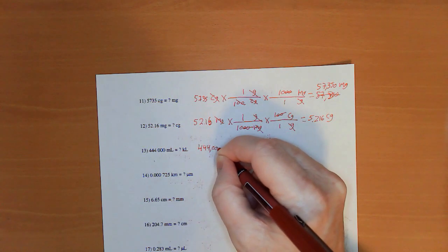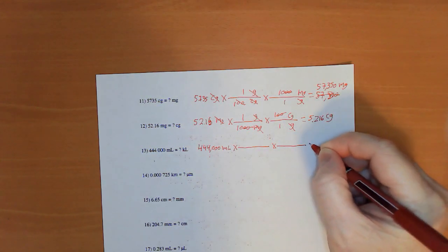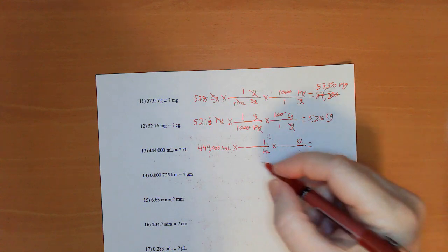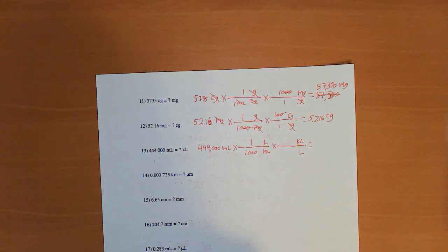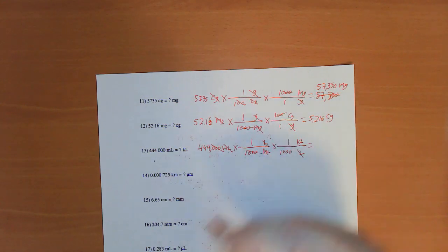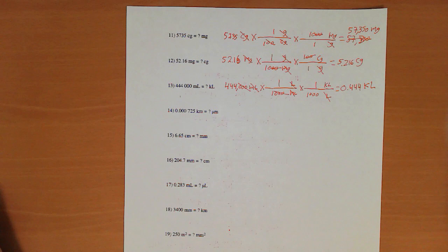Now, 444,000 milliliters times times. So, milliliters to liters. Leaders to kiloliters. There are 1,000 milliliters in a liter. And 1,000 liters in a kiloliter. Milli cancels milliliter cancels liter. Now, those three zeros are canceled by those three zeros. So, 444 divided by 1,000 is 0.444.